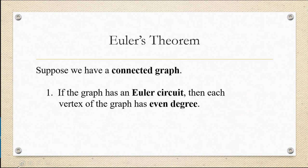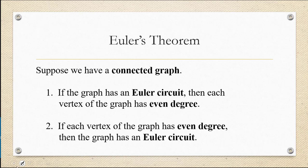So what Euler said was: suppose we have a connected graph, so it's all just one big component, and you can travel from any one point on the graph to any other point. If the graph has an Euler circuit, meaning there's a way to start and end at the same vertex and cover each edge exactly once, then each vertex of the graph has even degree. And if each vertex of the graph has even degree, then that actually guarantees that the graph does have an Euler circuit. The implication goes both ways.